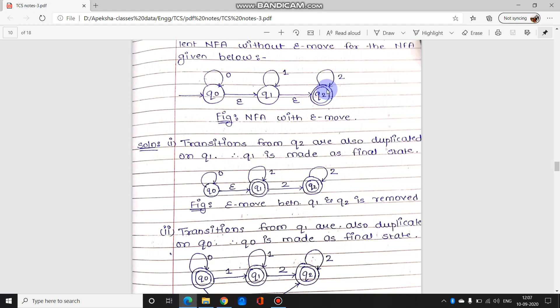So when we consider these two states, this becomes QI and this becomes QJ. Toh humne dekha tha ki QJ se koi bhi agar move ja raha hai kahin pe, toh same cheez QI pe duplicate karna padta hai. So as you can see there is a transition from Q2 to Q2, so this will be a transition from Q1 to Q2 as well.